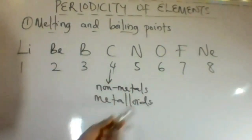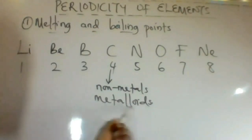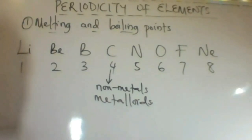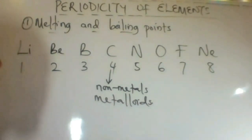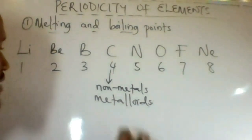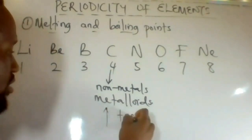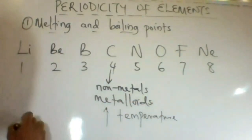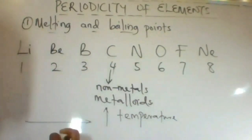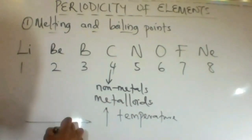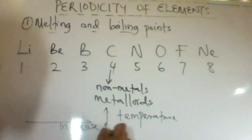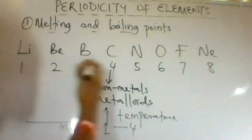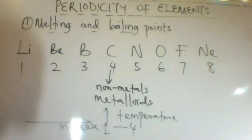Elements in group 4 are non-metals or mostly metalloids. They have strong covalent bonds between atoms, forming giant three-dimensional crystalline lattices like that in diamond. Therefore, very high temperatures are needed to break the bonding in these elements. The melting points and boiling points actually increase from group 1 to group 4.